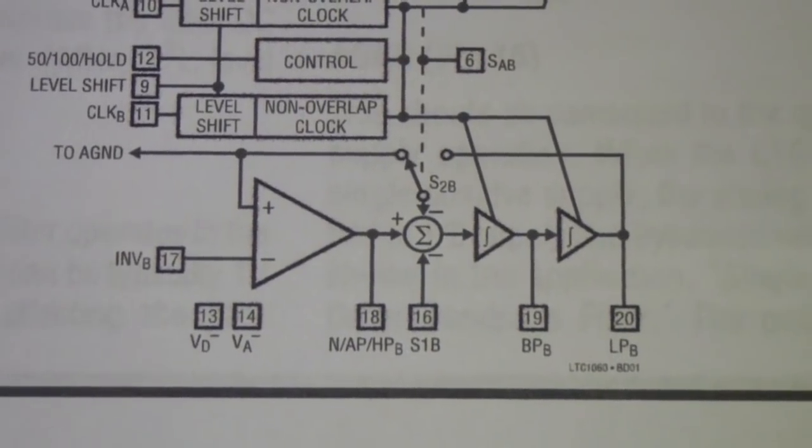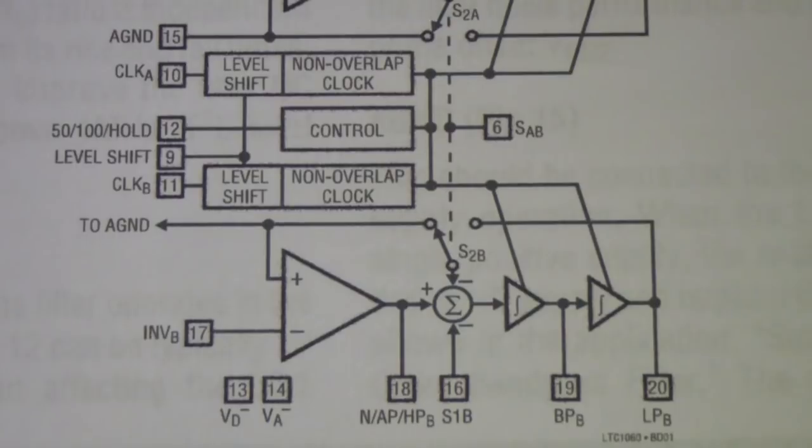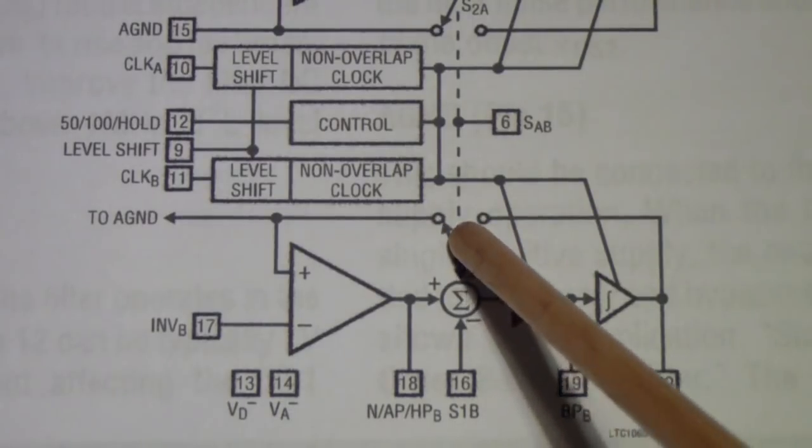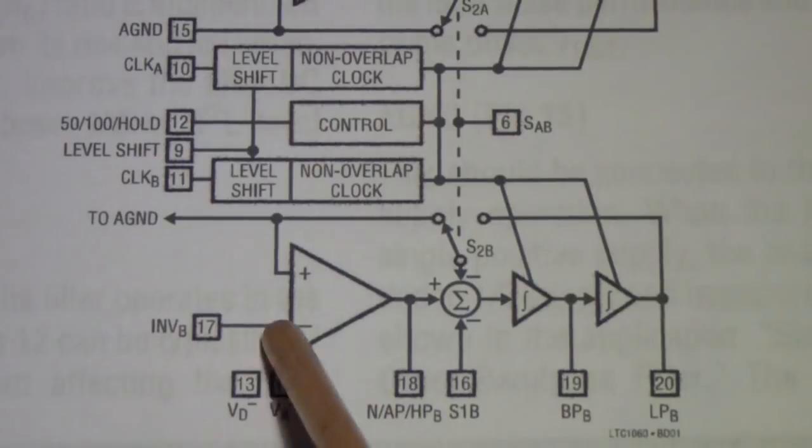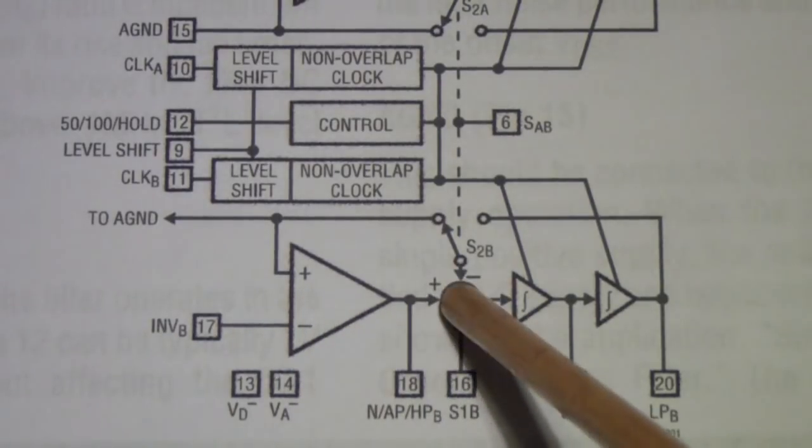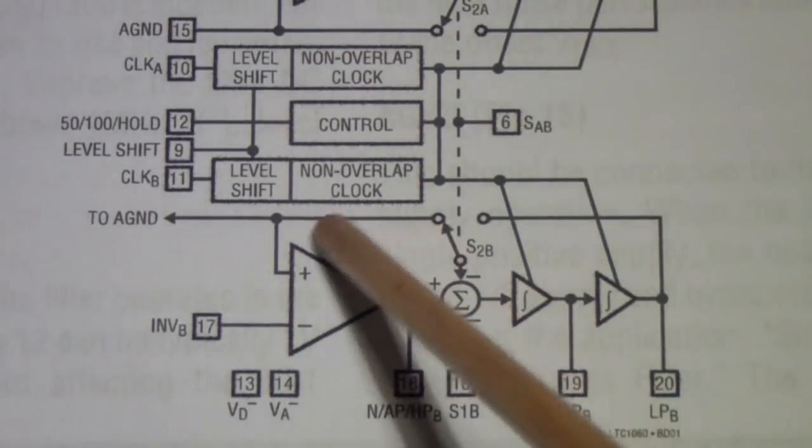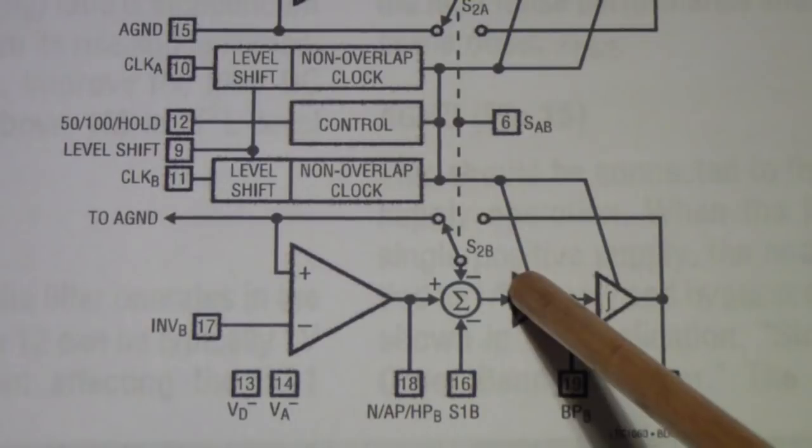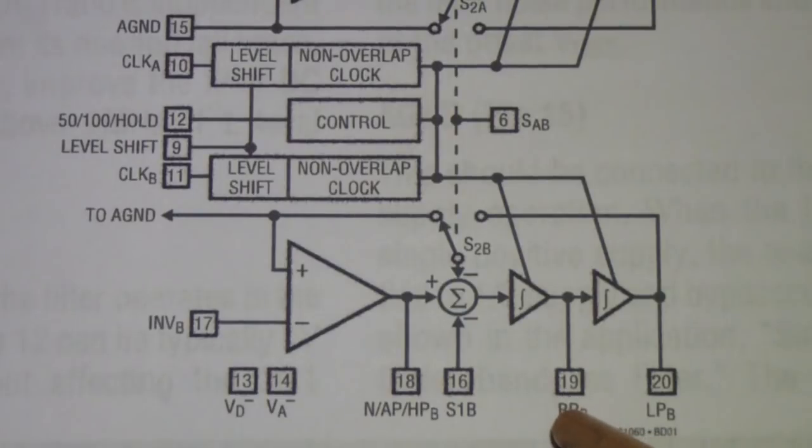The basic way that this unit works is it uses a switched capacitor arrangement with a summer. In other words you input the signal and then what it does is it constantly switches between the output and ground here and the summer then produces a signal that in essence produces the bandpass output.